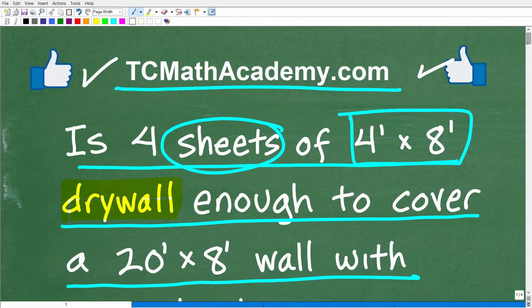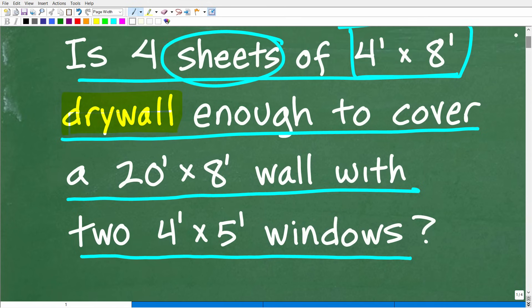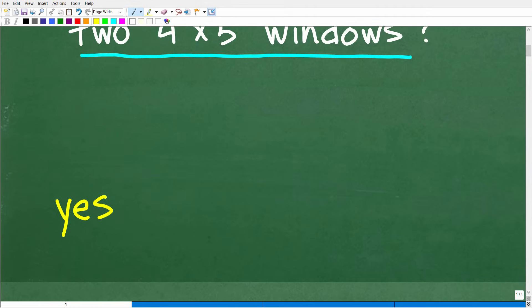Okay, so let's go and take a look at the answer here. But the question is, is this amount of material enough to do this job? In other words, to cover this wall with these two windows. So basically, this is a yes or no kind of question. And the answer is yes, we do have enough material with these four sheets of drywall.